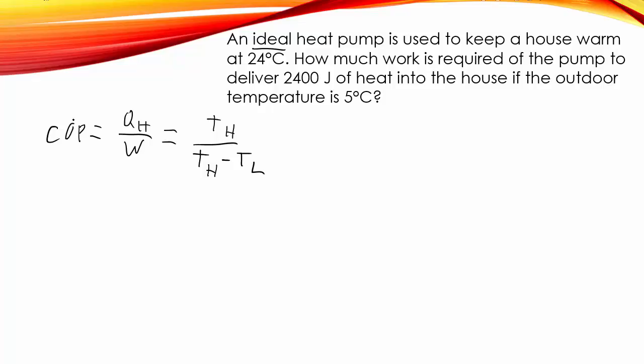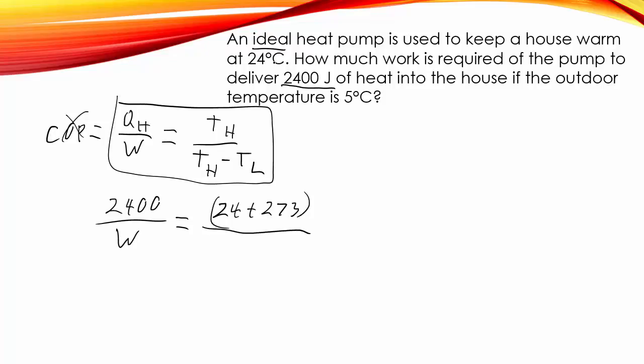So, what we're going to do here, we don't have the coefficient of performance, but we can solve for it by plugging in over here, and then we can set that equal to this. But I'm just going to forget about that and just use the fact that these two things are equal to each other to solve for the work. So, QH, that's the amount of heat we want delivered, so that's the 2400. W is going to be the unknown that I'm solving for. The high temperature is the temperature inside, so 24. You've got to convert that to kelvins. Then in the denominator, we've got TH minus TL, which is the 24 degrees again and the 5 degrees.